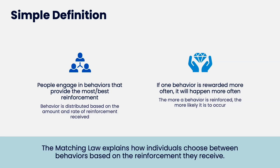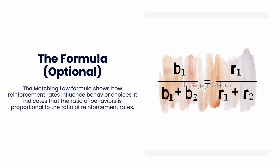One behavior is rewarded more often, it will happen more often. The more a behavior is reinforced, the more likely it's going to occur. The matching law formula is: behavior one divided by behavior one plus behavior two — it's always going to go with whatever creates the most reinforcement. The formula shows how reinforcement rates influence behavioral choices, and indicates that the ratio of behaviors is proportionate to the reinforcement rate. The ratio of reinforcement will equal the ratio of your behavior.